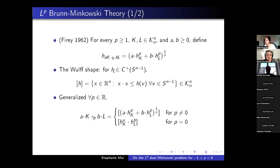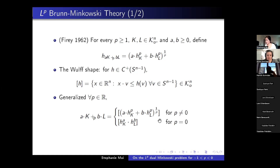To fix the convexity issue for P < 1, we take the Wulff shape of the support function. For positive continuous functions on the unit sphere, the Wulff shape is defined by a formula. Geometrically, if you have a positive continuous function on the unit sphere treated as a support function, the Wulff shape is the largest convex body within the shape defined by that support function. Essentially, the Wulff shape makes non-convex things convex, fixing the P < 1 case.